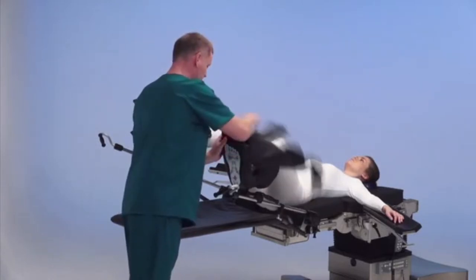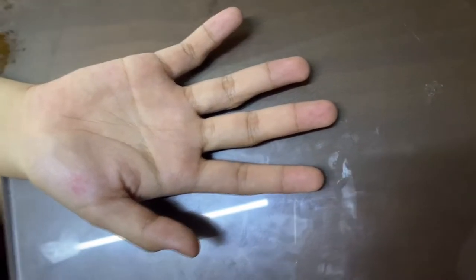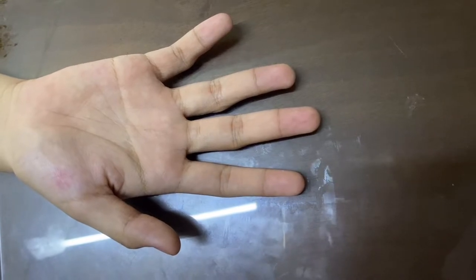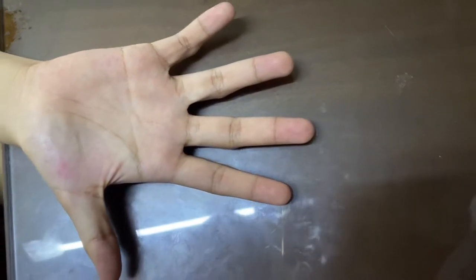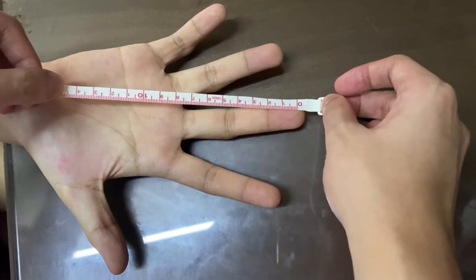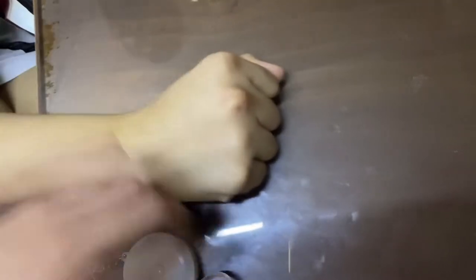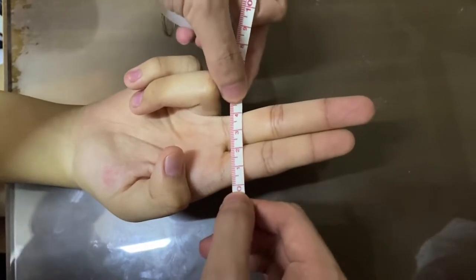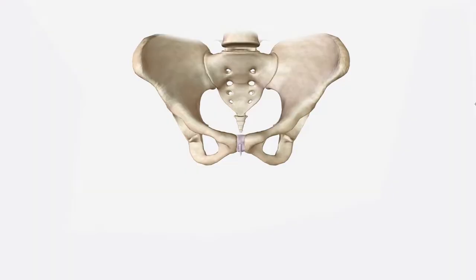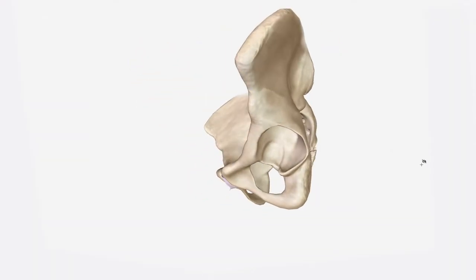Ensure that the buttocks are at the edge of the table. It is important to know the dimensions of the hand you use for examining. The important measurements are the distance between the tip of the middle finger and the base of the thumb, the transverse diameter of your closed fist measured across the knuckles, and the combined width of your middle and index finger. The examiner should be wearing gloves, and using a lubricant may be necessary to minimize discomfort.